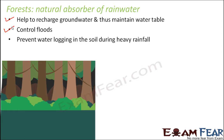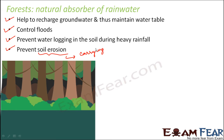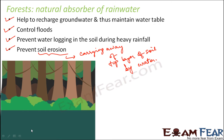Forests prevent waterlogging in the soil during heavy rainfall, and they also prevent soil erosion, because the roots of the plants hold the soil so tightly that it cannot be carried away by water. Soil erosion is the carrying away of the top layer of soil by wind or water. During heavy rainfall the topmost layer can be carried away, and since that layer is the most fertile, losing it hampers crop productivity. Forests prevent this by tightly holding the soil.